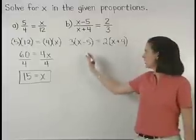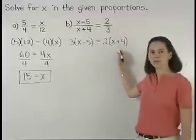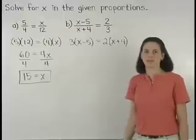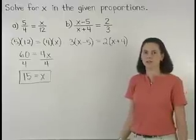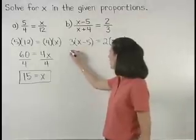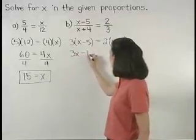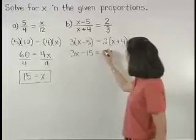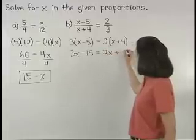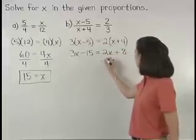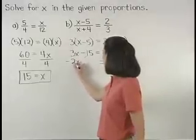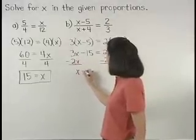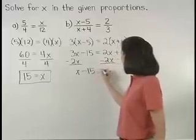Notice that we put the x minus 5 and the x plus 4 in parentheses. Now, distributing on both sides of the equation, we have 3x minus 15 equals 2x plus 8. And subtracting 2x from both sides gives us x minus 15 equals 8.